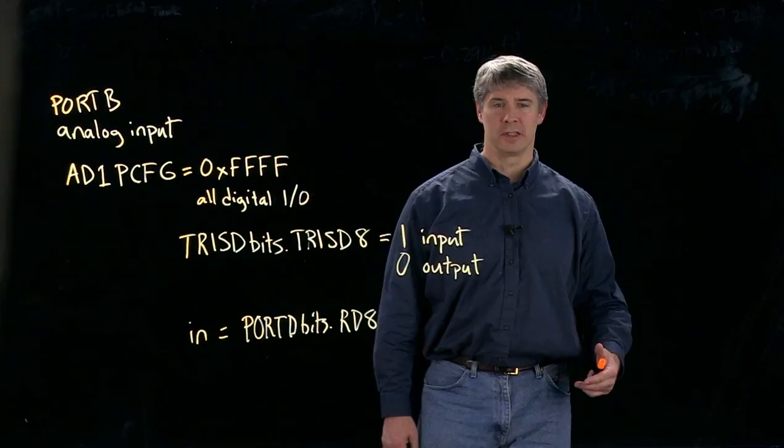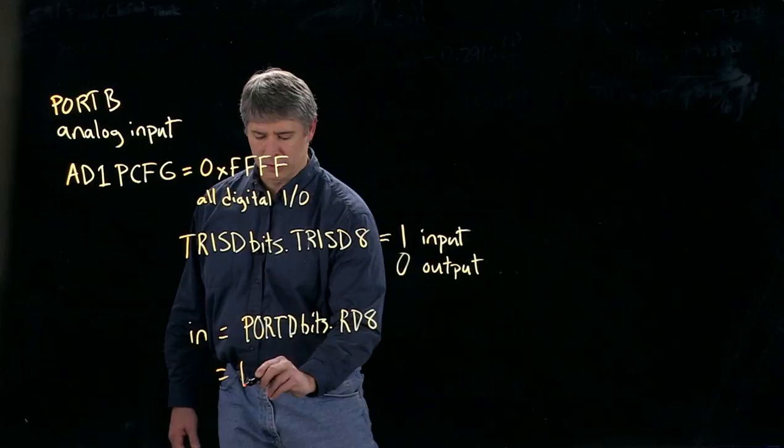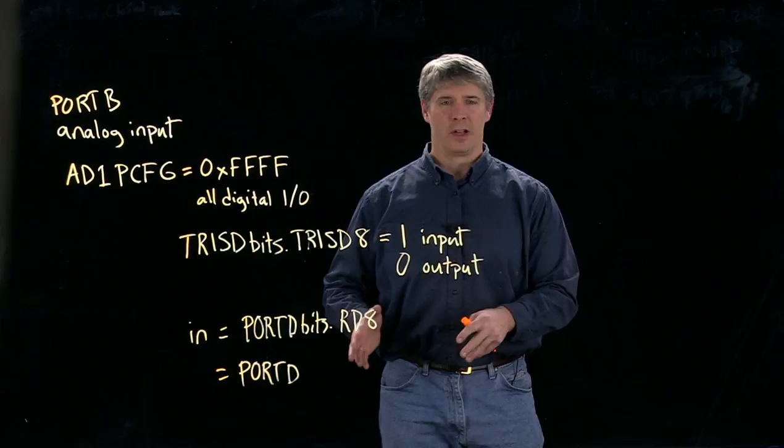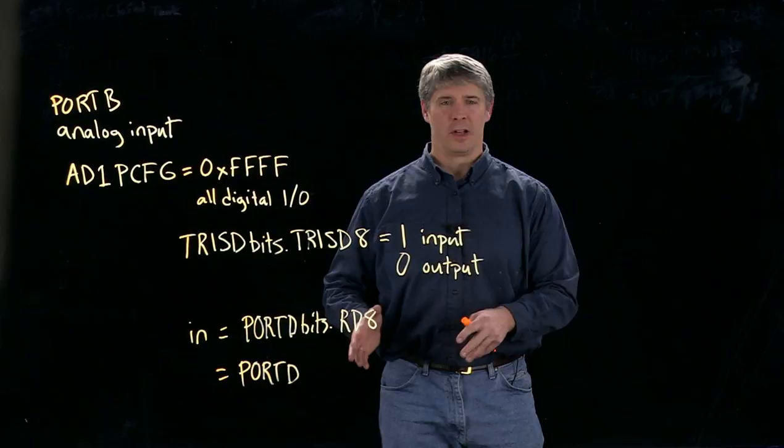Or we could read the entire port at once by just saying n is equal to PORTD. And that will give us an unsigned integer that has the values of 0s and 1s corresponding to low voltage or high voltage on all 16 pins of port D.